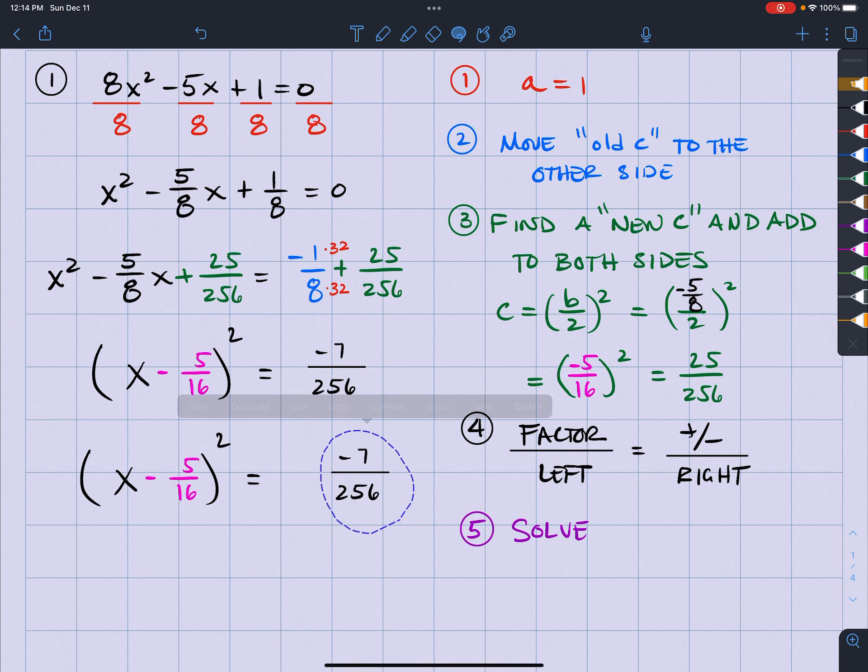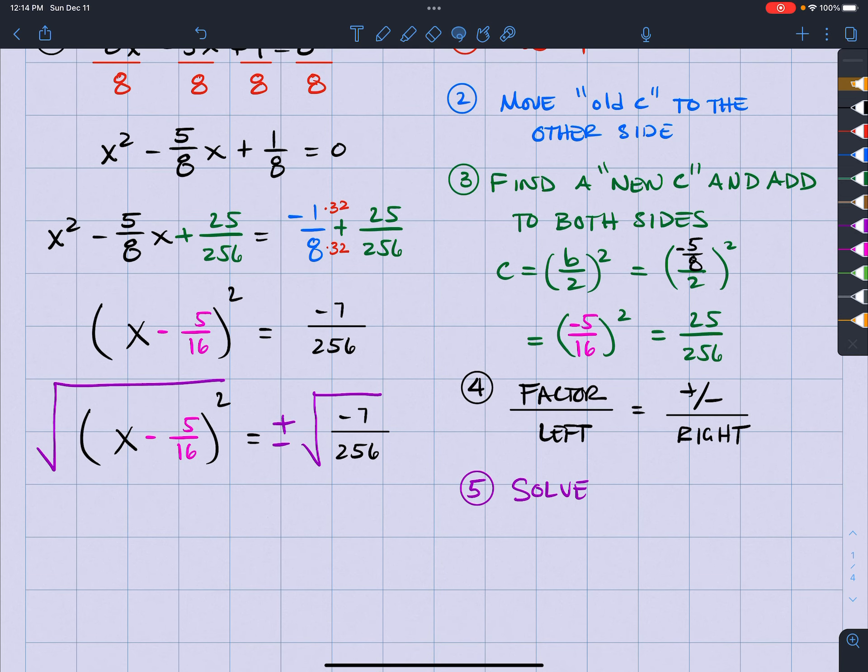And every time we take the square root, I have to include the plus and minus. Over on the left side, the square and the square root are opposite operations. So they cancel each other out.